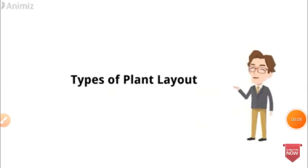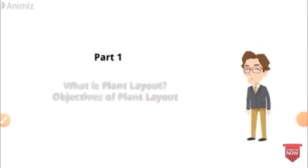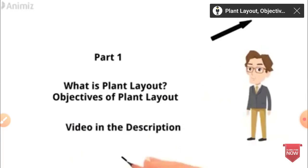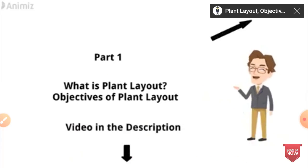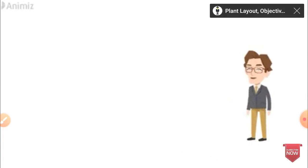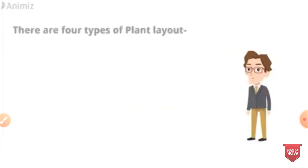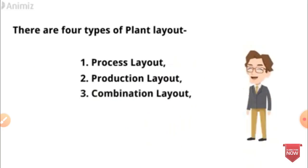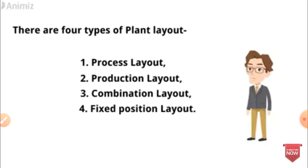Types of Plant Layout. What is the Plant Layout? Objective of Plant Layout. There are 4 types of Plant Layout: First one is the Process Layout, second one is the Product Layout, third one is the Combination Layout, and fourth is Fixed Position Layout.